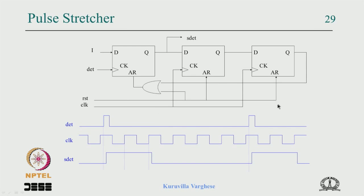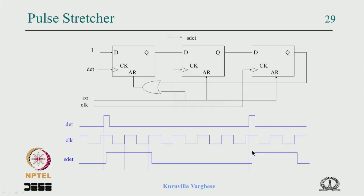So at the beginning everything is reset, then the pulse arrives and is stretched by at least one clock period. Adding more flip-flops stretches it by more clock periods. It is not a very practical circuit because of timing issues at the catching flip-flop input, and it is not convenient if you need to stretch by, say, 10 clock periods.